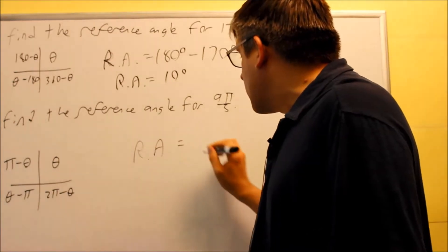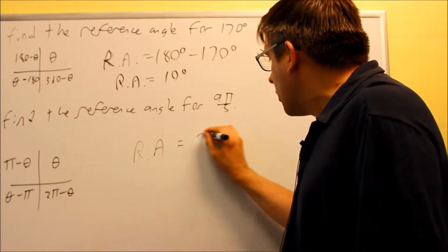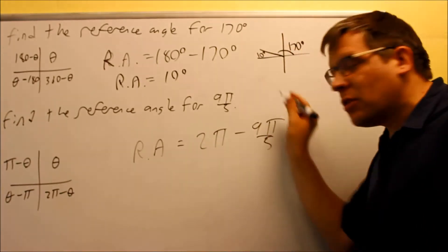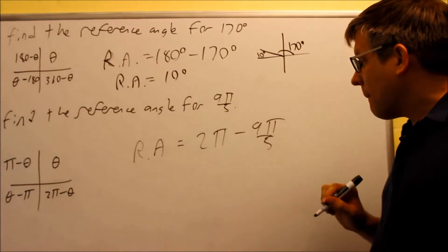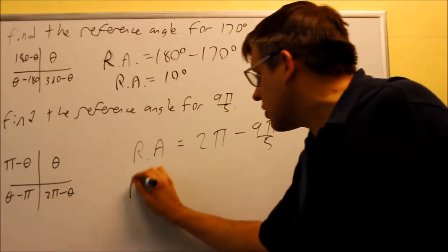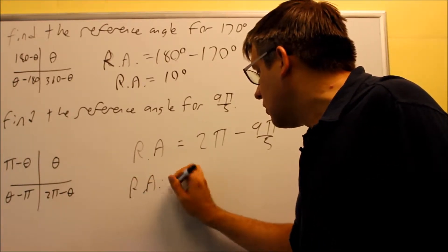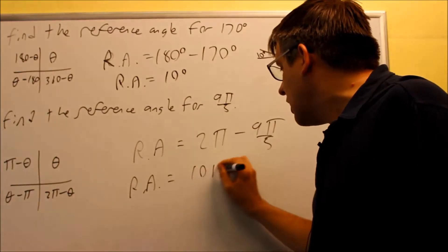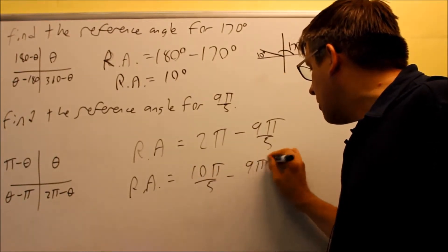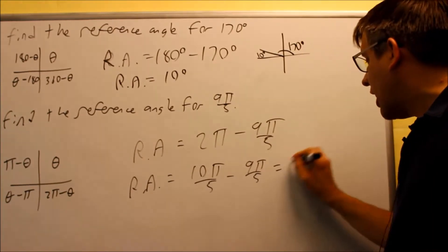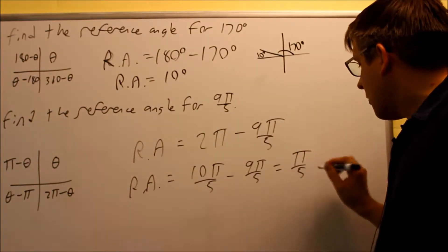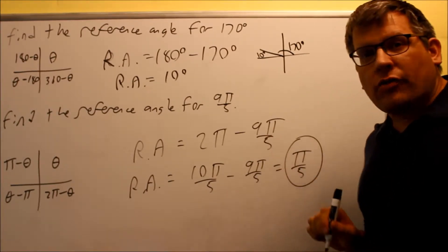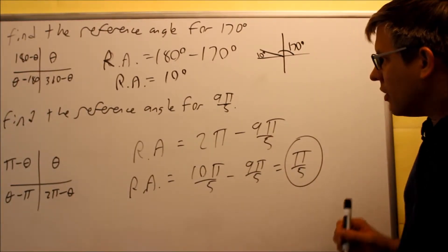So I'm going to do, reference angle is going to equal, I'm going to use this formula, 2 pi minus 9 pi over 5. I'm keeping all of it in terms of radians here. We need to get common denominators with this. So reference angle is going to equal, if we change it, that's going to be 10 pi over 5, getting common denominators, minus 9 pi over 5, is going to equal pi over 5. So pi over 5, that would be the reference angle for this one.